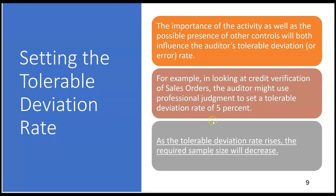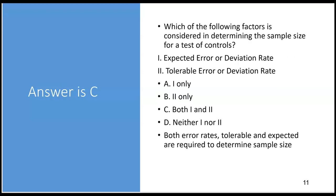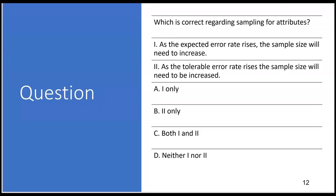So far, the two factors that determine sample size are: the tolerable deviation rate — we could tolerate 5% error and still be okay with the control — and the expected error rate — we might only expect 2% error. Both of those factors are important in determining sample size. Practice question: Which of the following factors is considered in determining the sample size for a test of controls? Expected error rate — yes, that might be 2%; tolerable error rate — yes, we could tolerate up to 5%. Both are correct — the answer is C.